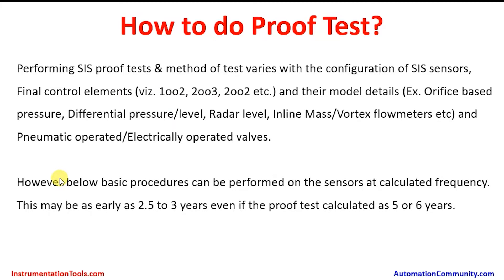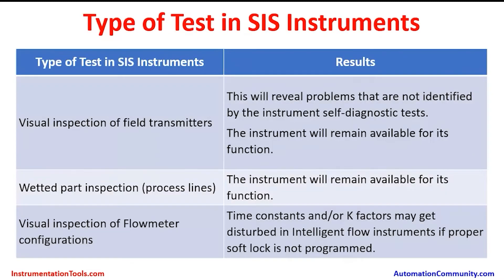The basic procedures below can be performed on the sensors at the calculated frequency. This may be as early as 2 or 3 years, even if the proof test is calculated for 5 to 6 years, as sometimes it may be required to perform at an earlier interval — perhaps due to a planned trip well before the planned target date or planned shutdown dates. The following types of tests are to be performed on the safety instrumented system instruments.